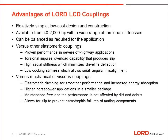Advantages of the Lord LCD coupling line include: they are relatively simple, low cost in construction, and easily installed. They are available from 40 to 2,000 horsepower with a wide range of torsional stiffnesses to isolate a wide range of torsional inputs, and can be factory balanced as required. Versus other elastomeric couplings, they offer proven performance in severe off-highway applications, torsional impulse overload capability with slip, high radial stiffness minimizing driveline deflection, low cocking stiffness allowing small angular misalignments, and elastomeric damping for smoother performance and increased energy absorption. They are maintenance free, and performance is not affected by dirt and debris around the transmission and clutch housing.